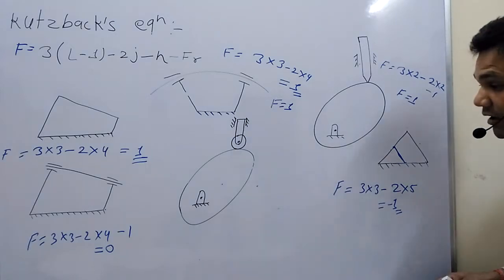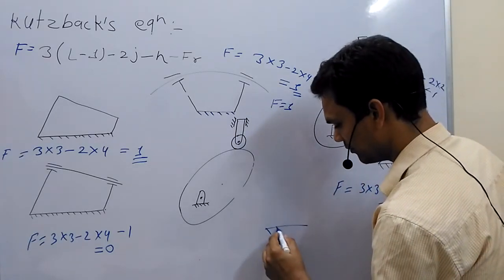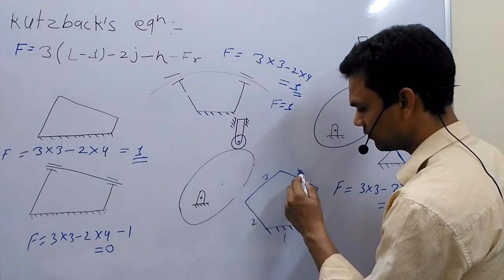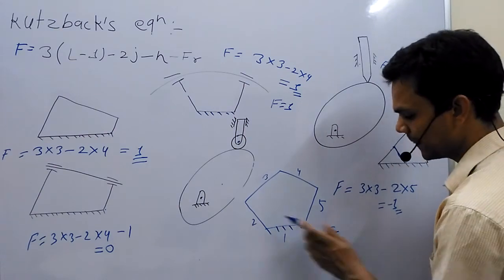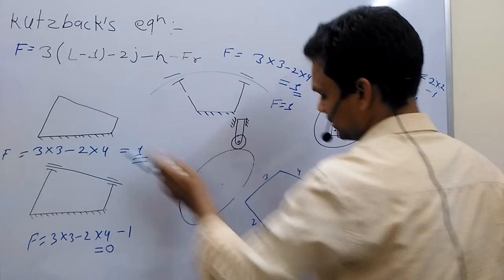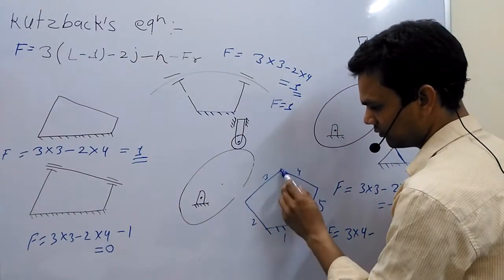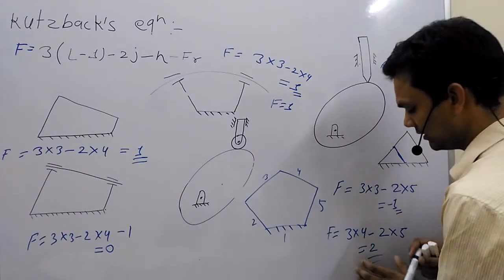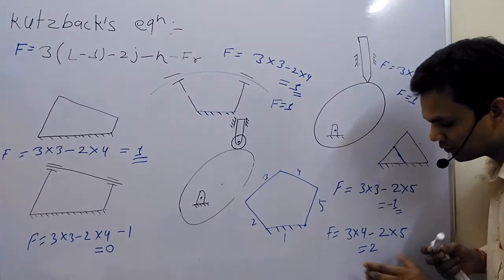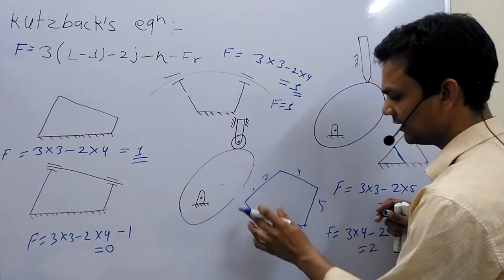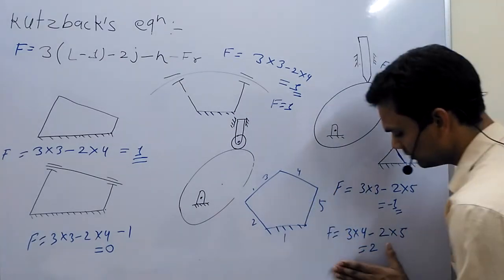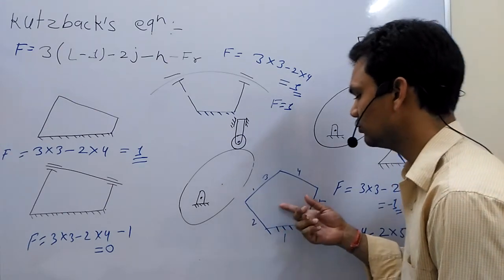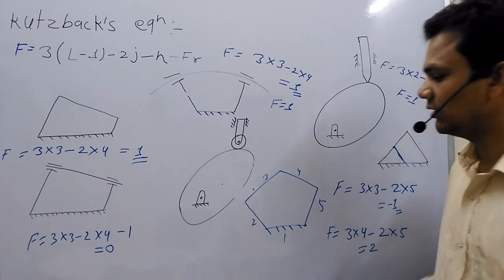So you can see, now we consider another case to understand the importance of degree of freedom. Link one, two, three, four, five. Joints: one, two, three, four, five. Now we calculate the degree of freedom in this system: three into n minus one. So four minus joints one, two, three, four, five — two into five. So the degree of freedom is two. Now, what does this information give us? It gives information that if I control two links in this system, I get constrained motion. So this is the importance of degree of freedom. By calculating degree of freedom, we can convert an unconstrained motion into a constrained motion or we can obtain desired motion.